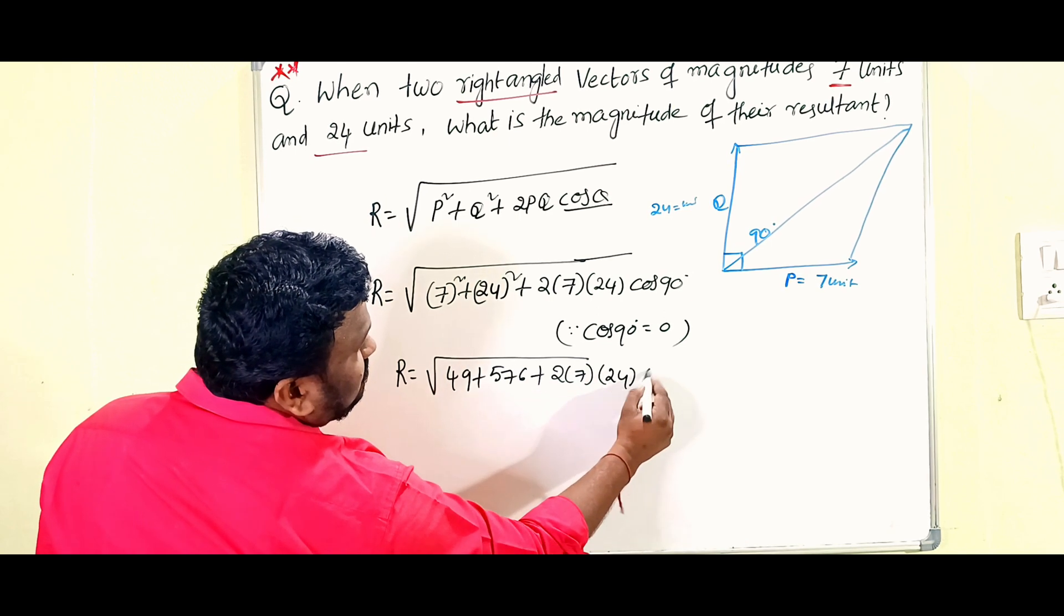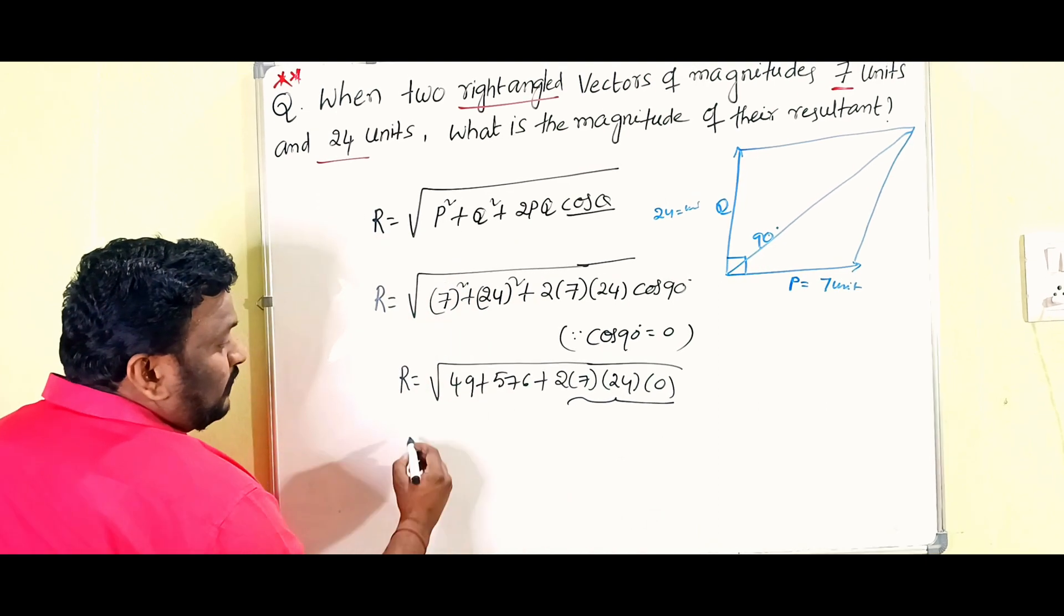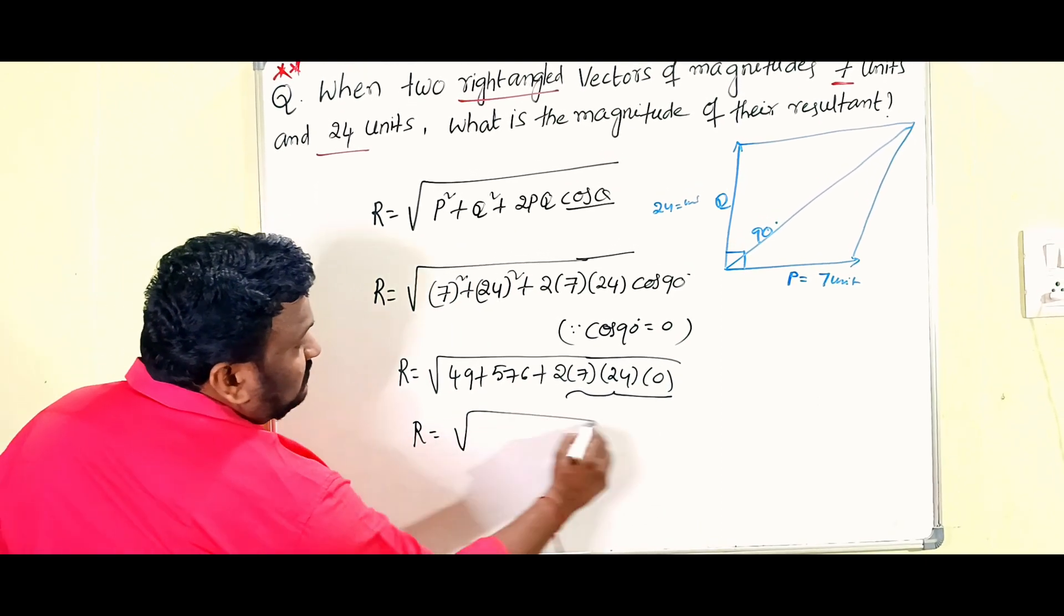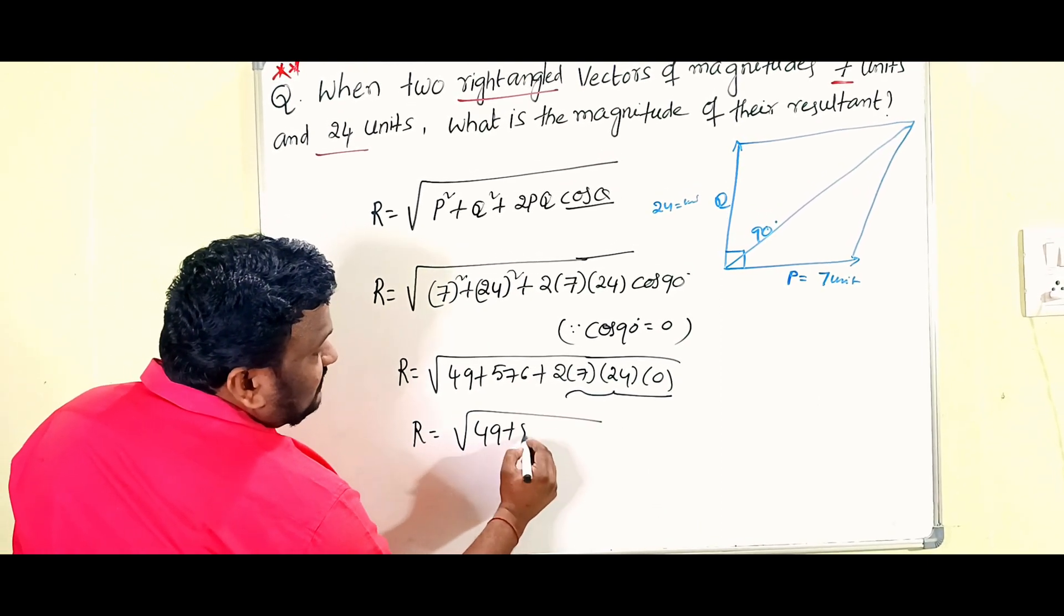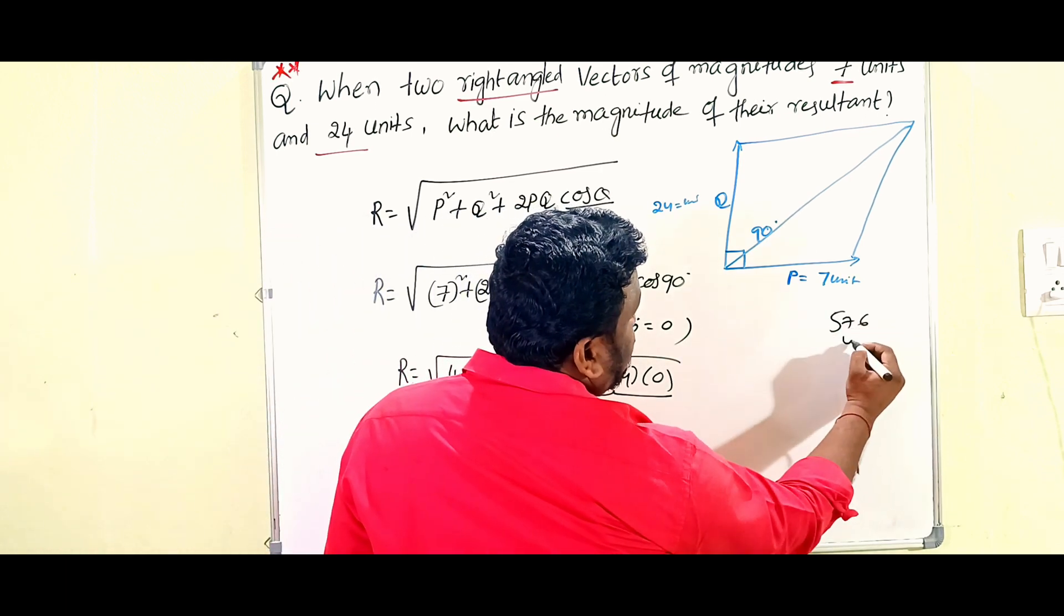Into 0. So this term becomes 0. Then R equals 49 plus 576, so 576 plus 49.